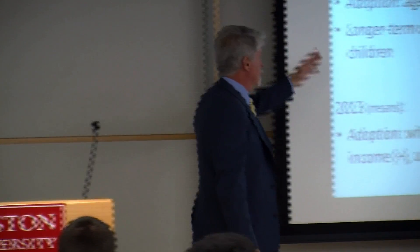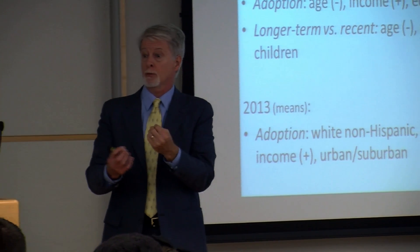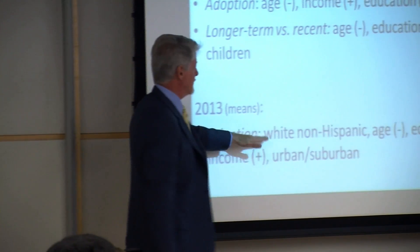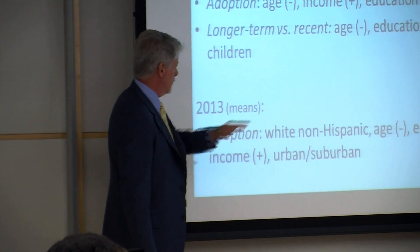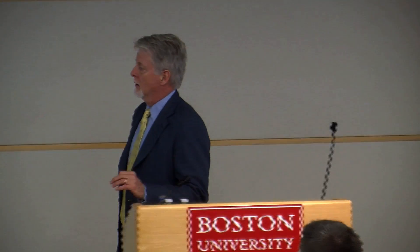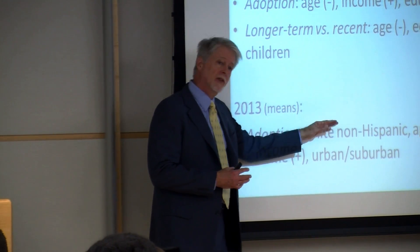Jumping ahead to 2013, from the recent Pew study — these are just means, not controlling for regression — we're back to whites, younger, lower educated, higher income, and urban and suburban areas. These are the factors that still affect differences in 2013. Even now with respect to internet use, there are digital divides — the mean level of adoption is actually different between these categories.